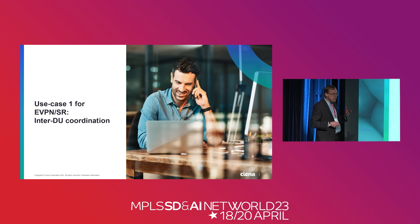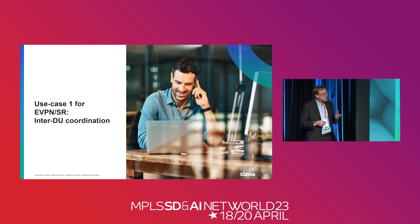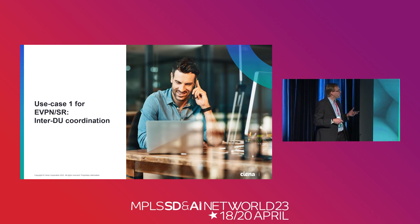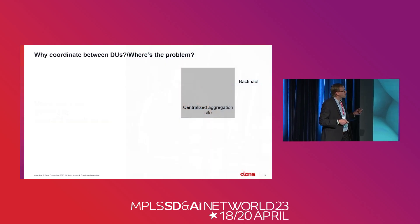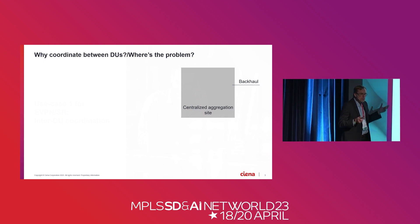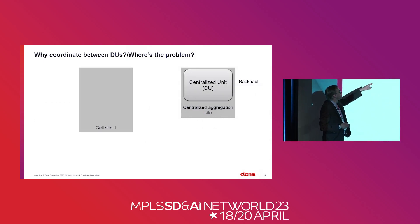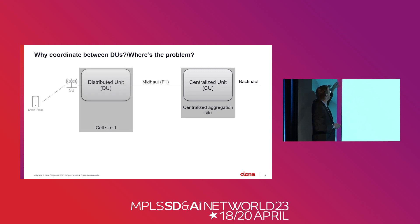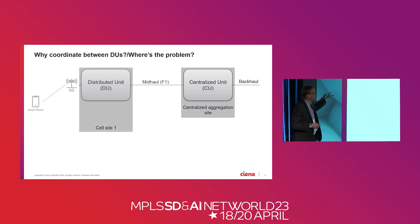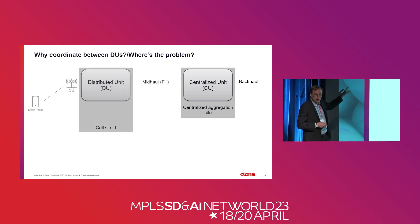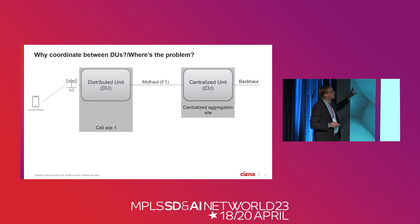I'll start off with the first one. That's about inter-DU coordination. This was a scenario we were asked to deal with. Starting off very straightforward: backhaul to a CU to another cell site, midhaul to a DU to a radio to a UE. Very simple. No problems.